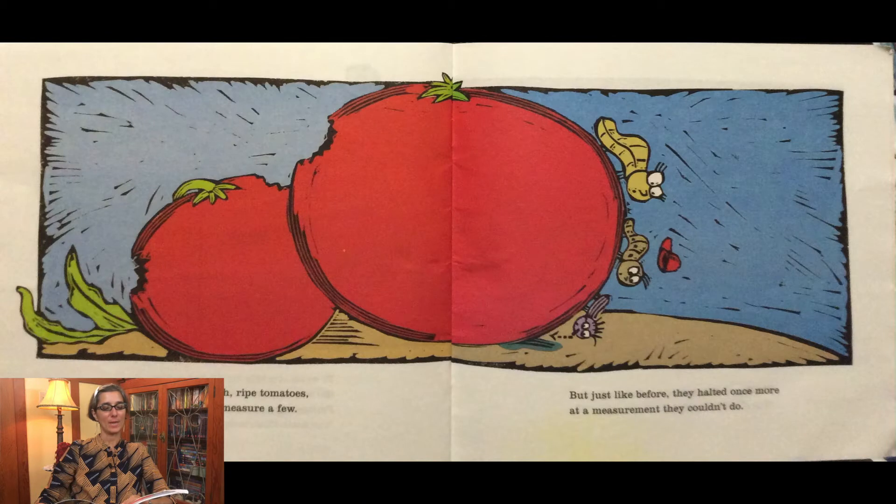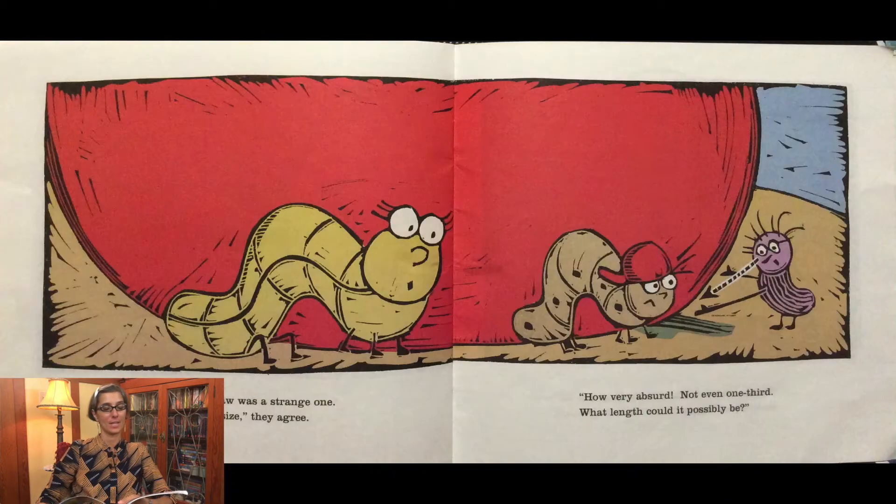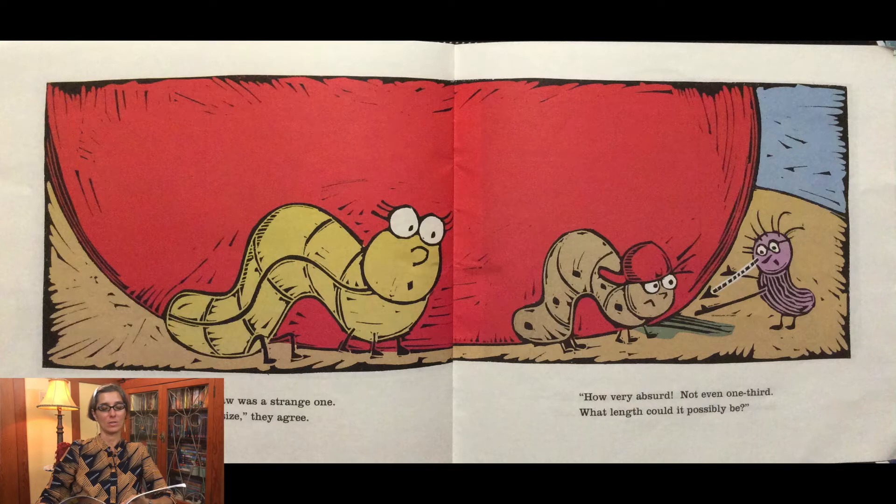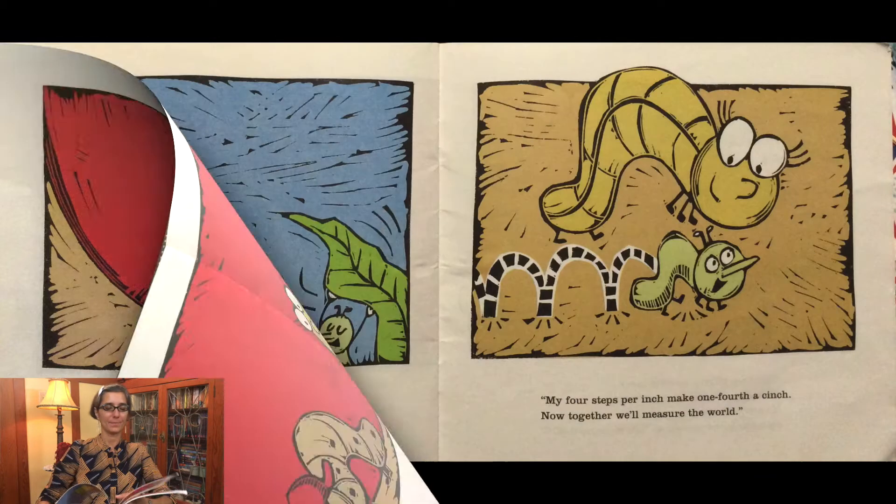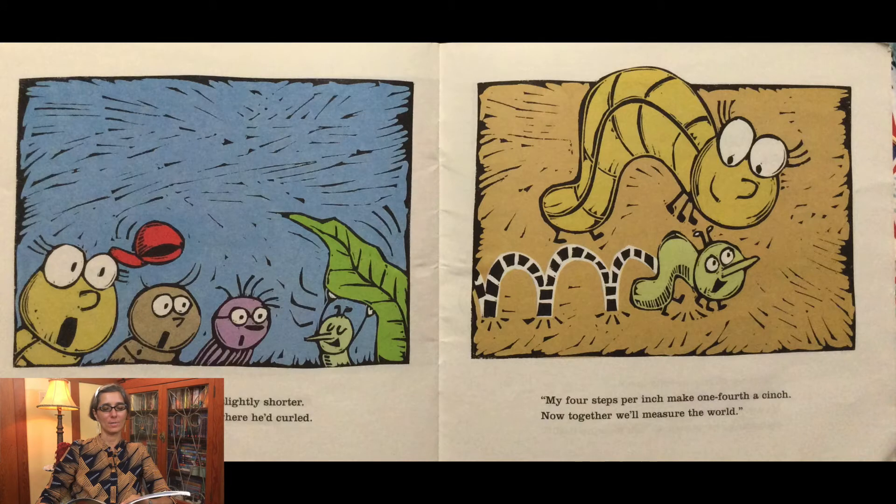Snacking on rich ripe tomatoes, they decided to measure a few. But just like before, they halted once more at a measurement they couldn't do. The fraction they saw was a strange one. Too short for half size, they agree. How very absurd. Not even one third. What length could it possibly be? It's me, said a worm, slightly shorter. He looped off the leaf where he curled. My four steps per inch make one fourth a cinch. Now together we'll measure the world.